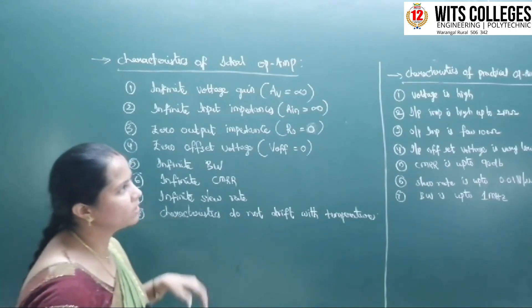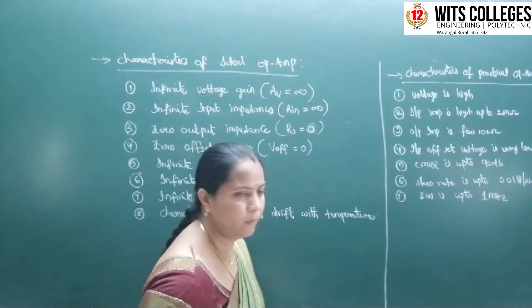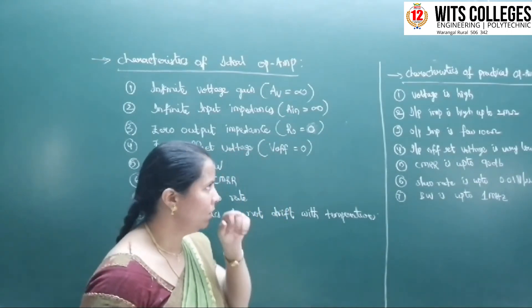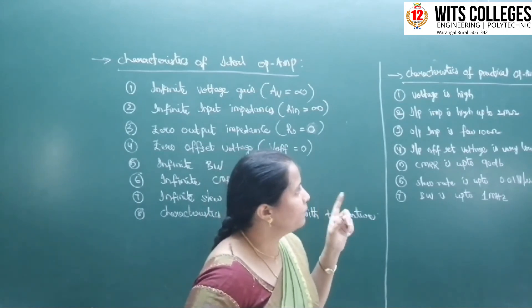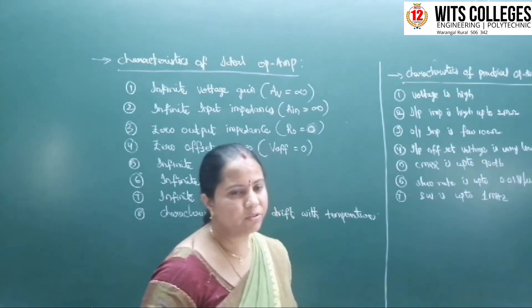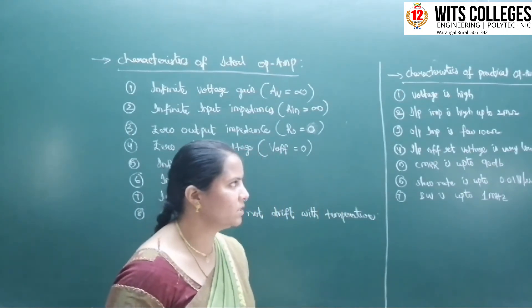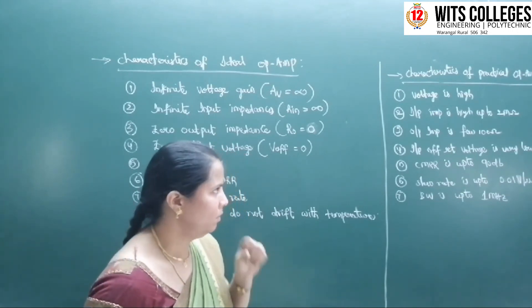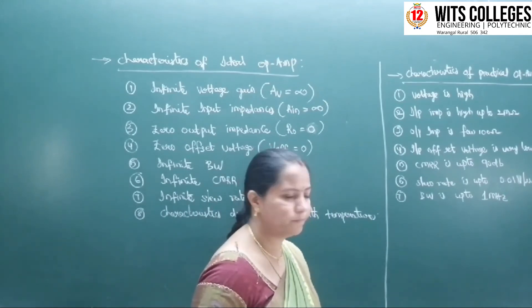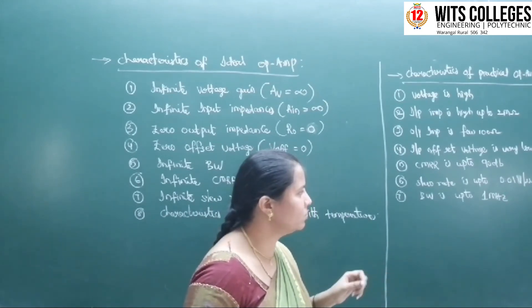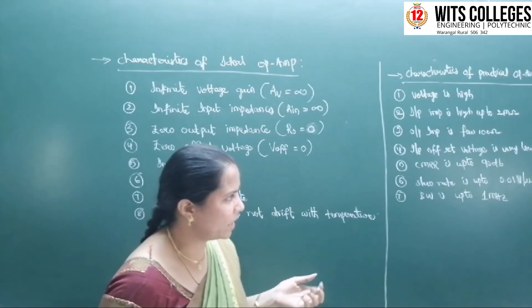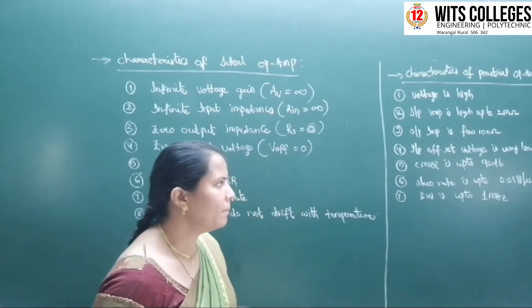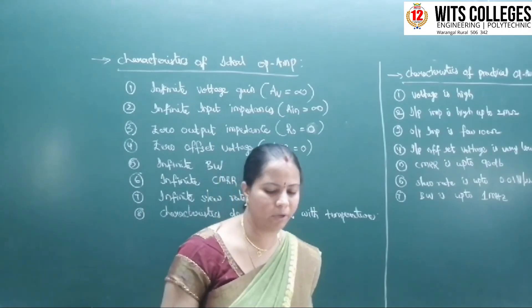For the practical op-amp: voltage gain is very high; input impedance is high, up to 2 mega ohms; output impedance is very low, about 100 ohms; input offset voltage is very low, about 100 microvolts; CMRR is up to 90 decibels; slew rate is up to 0.01 volts per microsecond; and bandwidth is up to 1 megahertz.